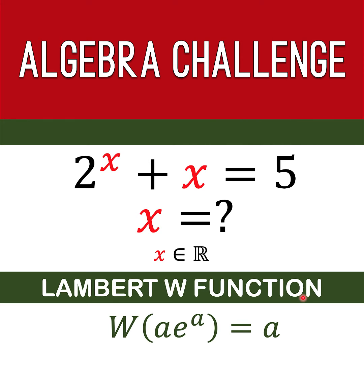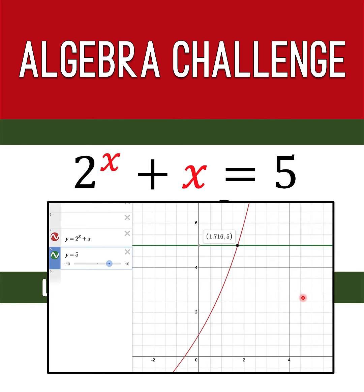Now let's solve this problem together. Let's begin by first visualizing our equation. If you have access to a graphing calculator like the Desmos graphing calculator, solving equations graphically is sometimes the easier method. Here we graph y equals 2 to the x plus x — that is the red curve — and then we graph y equals 5, which is the green line. The point of intersection between the red curve and the green line is the coordinate x equals 1.716 and y equals 5.